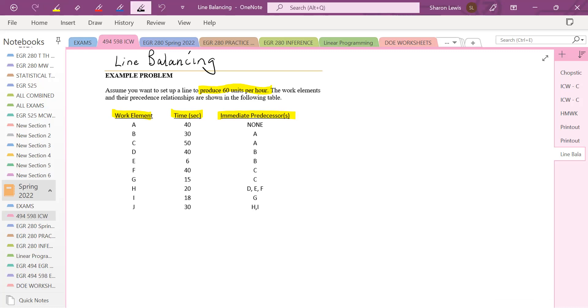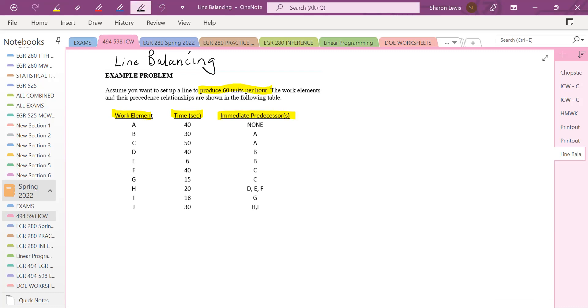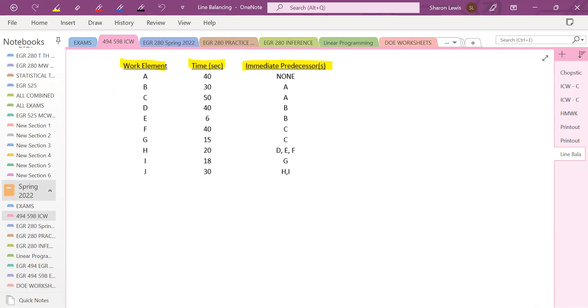So probably the best place to start is to create a precedence diagram. We look at these tasks and we build the diagram of the order in which the tasks can be performed. So A is first. A doesn't have any predecessors. It can start whenever. Now, once A is done, B and C can get started. A is 40 seconds, B is 30 seconds, C is 50 seconds.